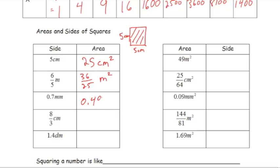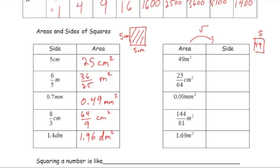In this second table, if you're given the area and want to find the side length, you find the square root of that area. For example, if the area is 49, you ask: what number times itself gives 49? That's the square root of 49. You're welcome to pause and try these yourself — I'll populate the table.